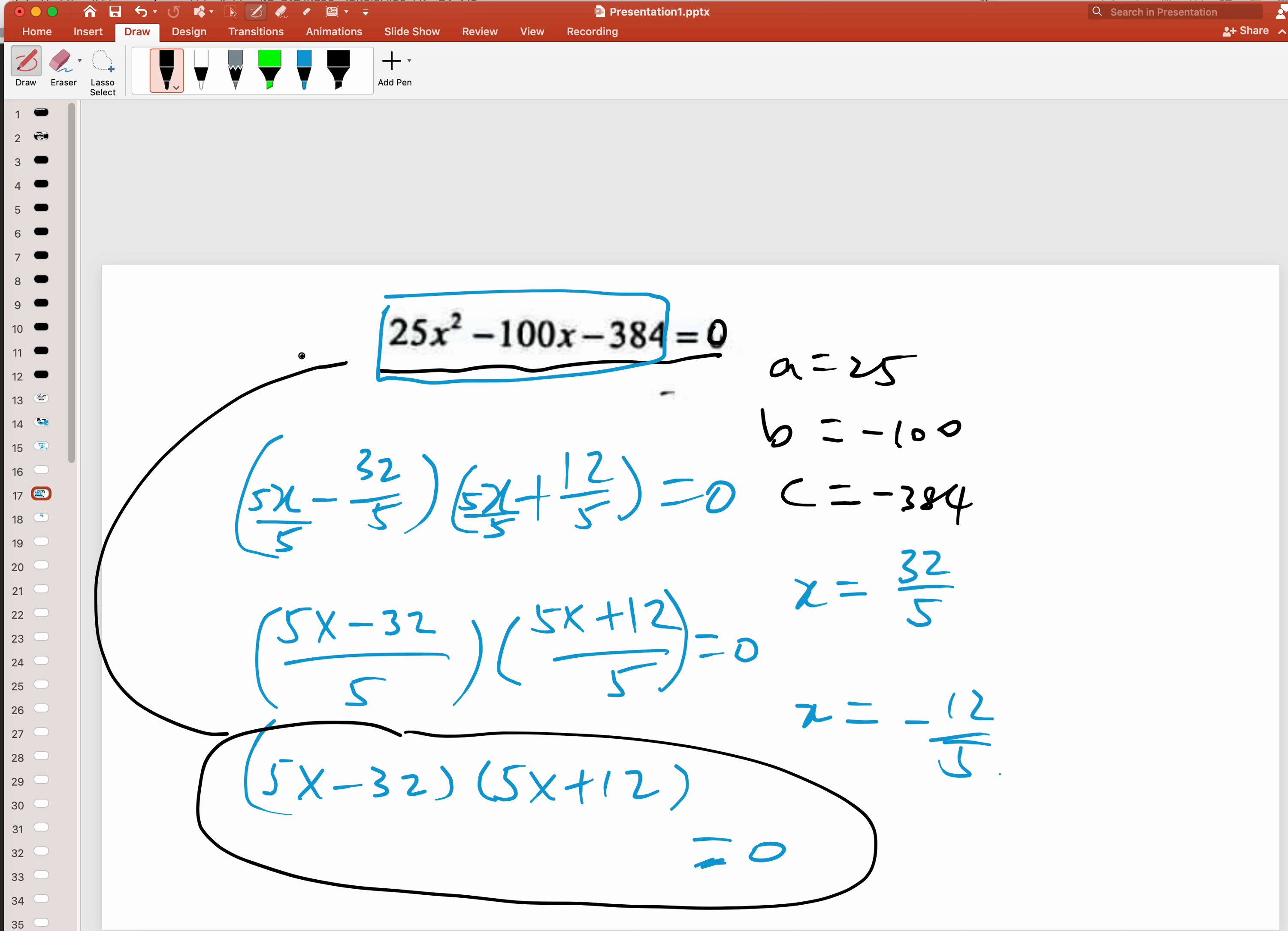Of course, you might not need to show this step to your examiner. You can test this out. This is 5 and 5, so this one is negative 32 and this one is positive 12.